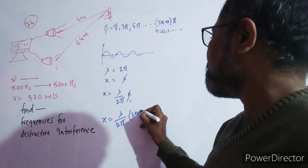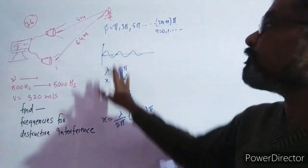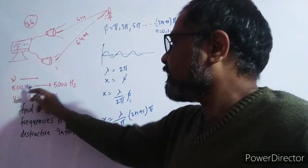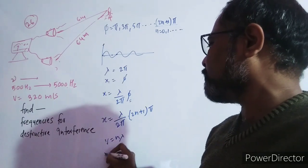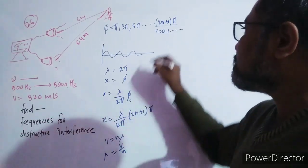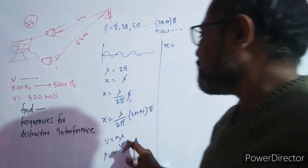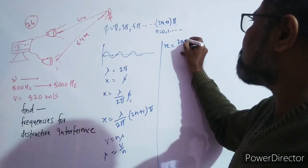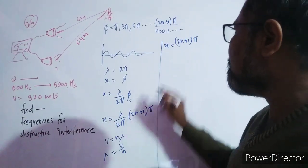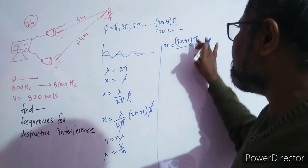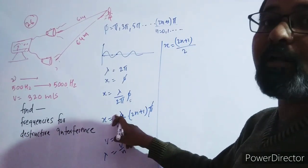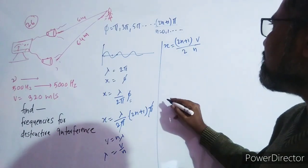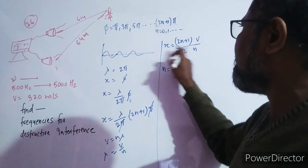Destructive interference के लिए phase difference (2n+1)π होना चाहिए। इसका path difference x = (2n+1)λ/2 होगा। λ को frequency के terms में convert करने के लिए λ = v/n रखते हैं। So x = (2n+1) into v, divided by 2 into frequency।